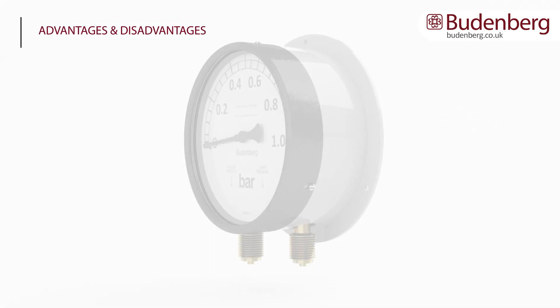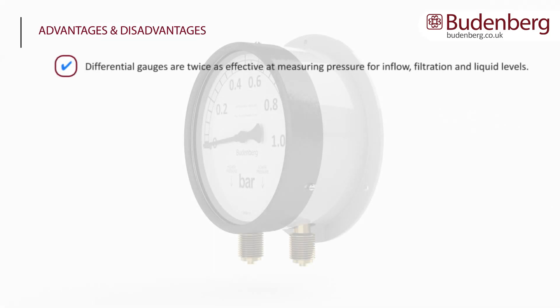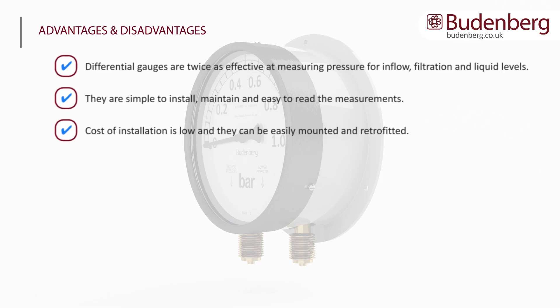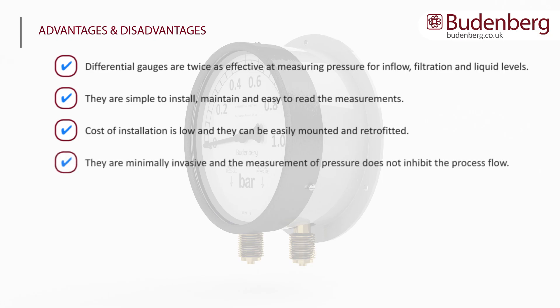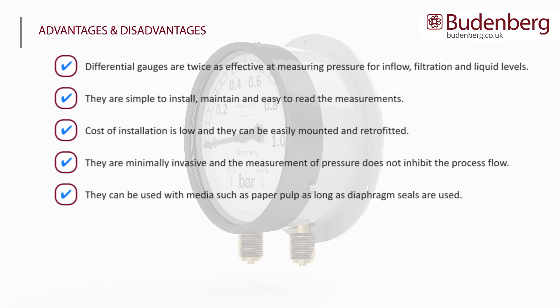Advantages and disadvantages: Differential gauges are twice as effective at measuring pressure for inflow, filtration, and liquid levels. They are simple to install, maintain, and easy to read. Cost of installation is low and they can be easily mounted or retrofitted. They are minimally invasive and the measurement of pressure does not inhibit the process flow. They can be used with media such as paper pulp, as long as diaphragm seals are used. A disadvantage is that an error may occur due to temperature fluctuations.